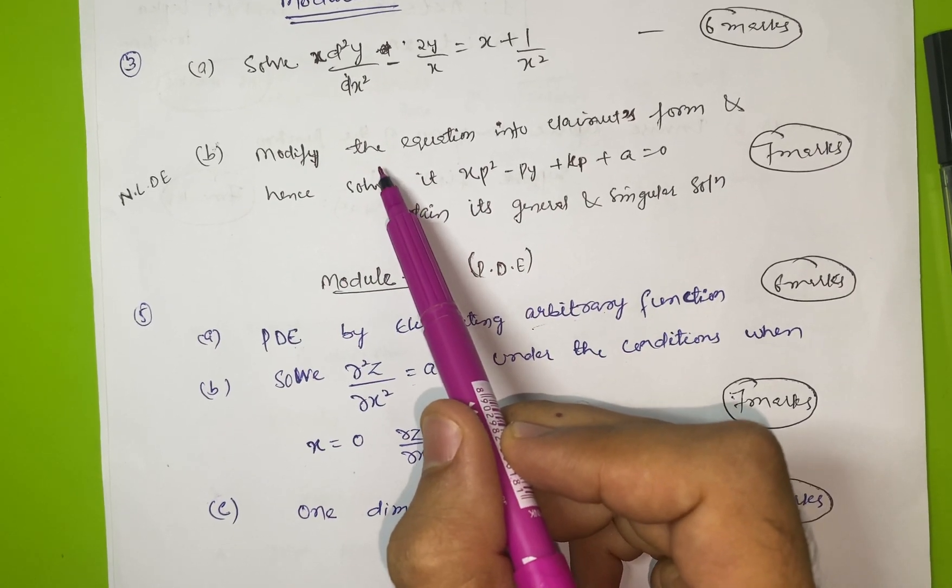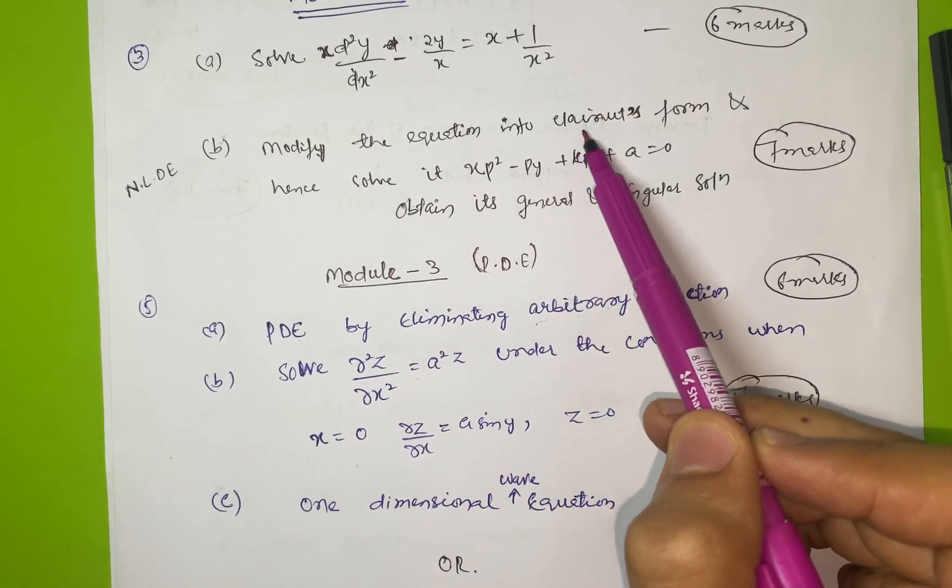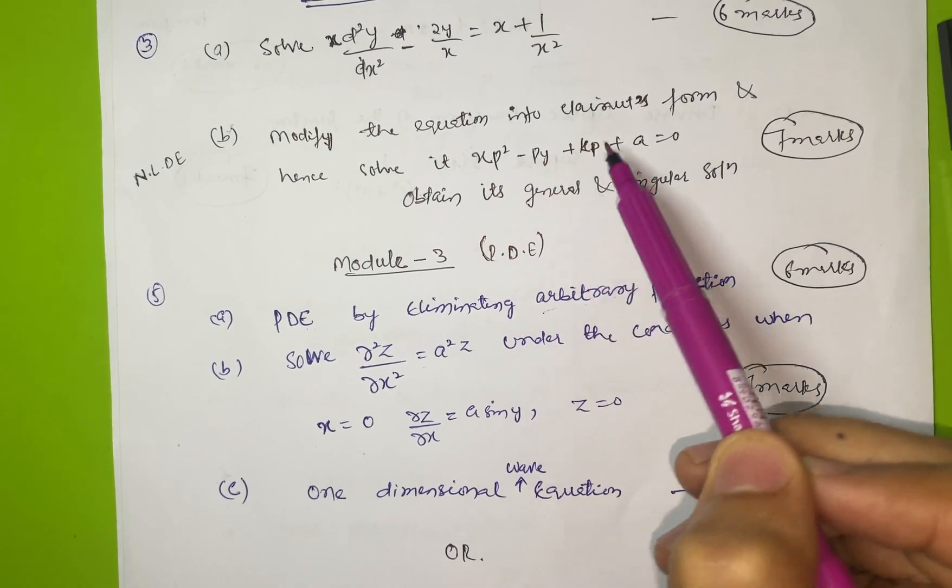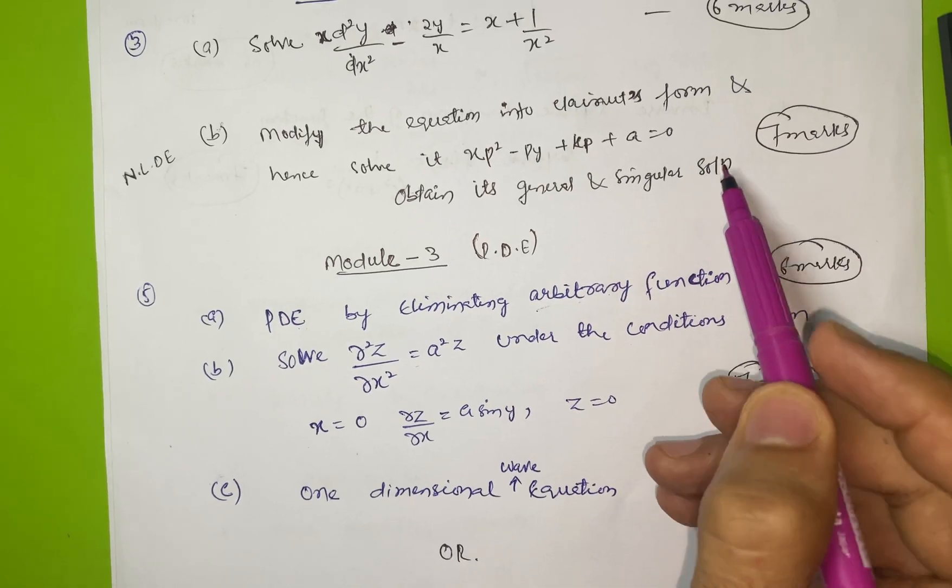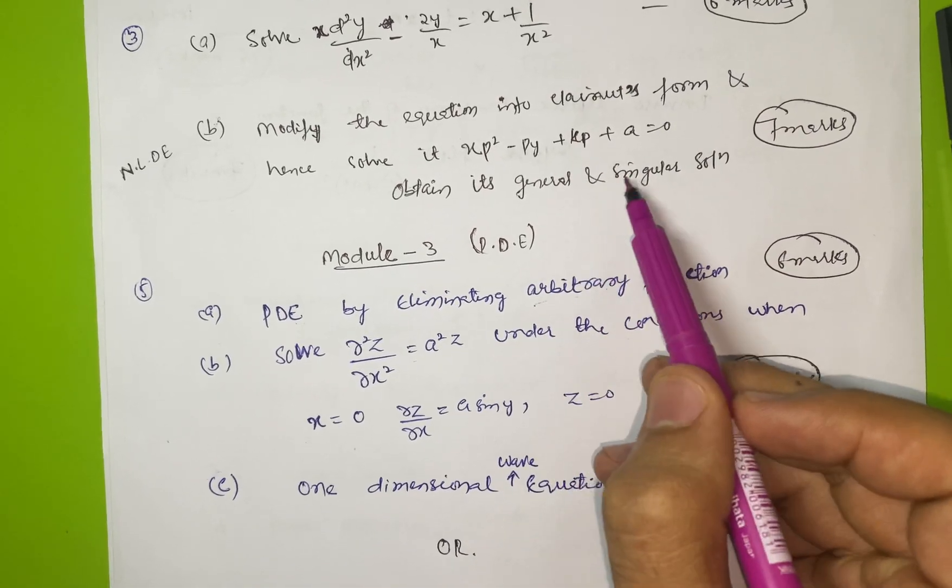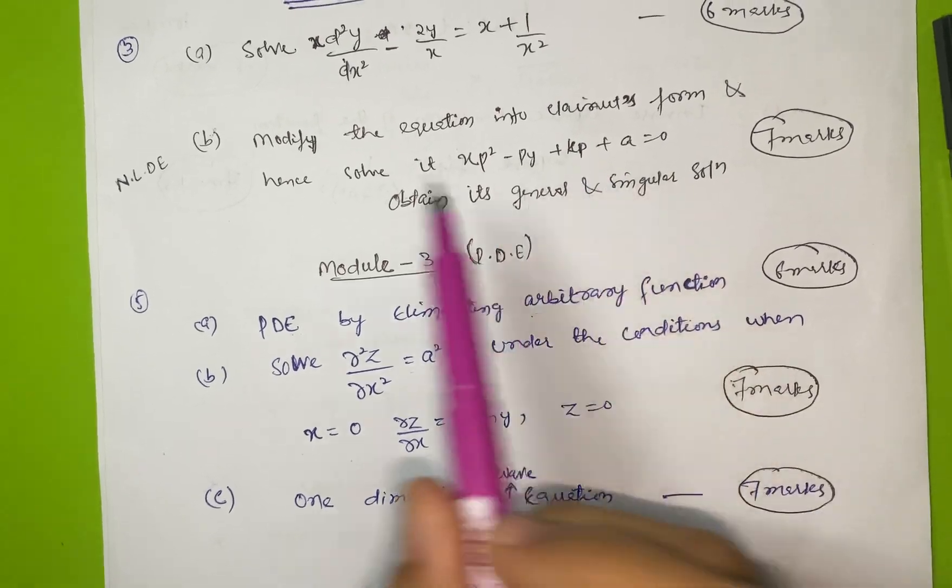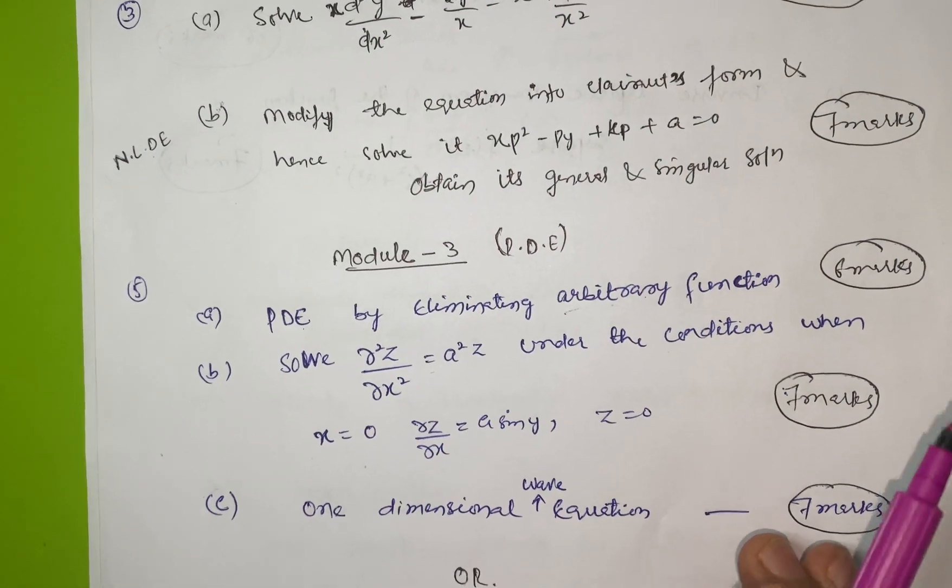And then another part which is most important, the most asked question in VTU examination: modify the equation into Clairaut's form and hence solve it. xp² - py + kp + a = 0, obtain its general and singular solution. If you check your papers you'll see this question in most question papers. This is non-linear differential equation, so Module 2 is over.